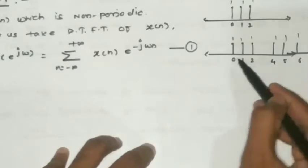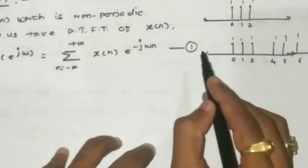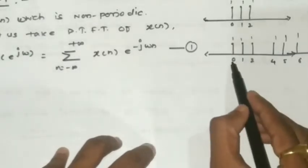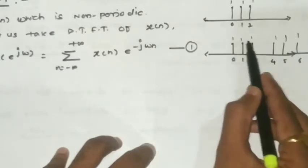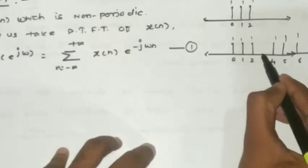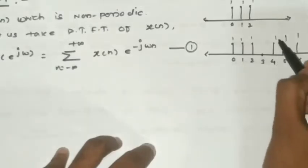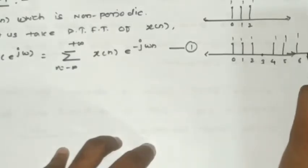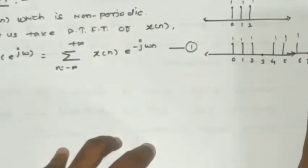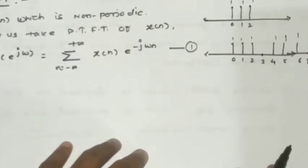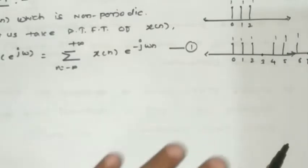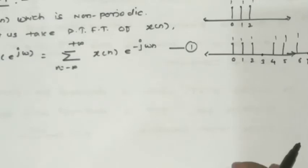So we get the sequence: indices 0, 1, 2 with amplitude 1, 1, 1; index 3 with amplitude 0; then 4, 5, 6 with amplitude 1, 1, 1; and index 7 with amplitude 0 (since 3+4=7). The signal is showing repetition. This means we can represent a non-periodic signal as periodic, provided we add a delay corresponding to N number of samples.